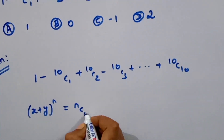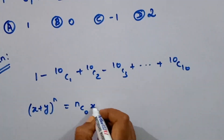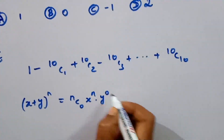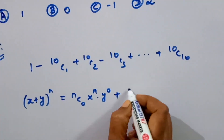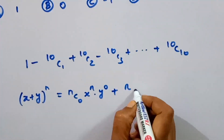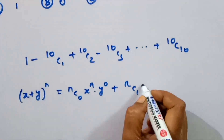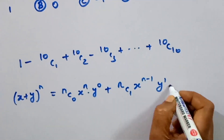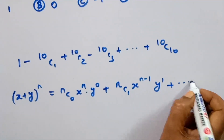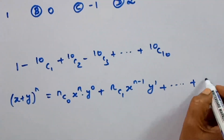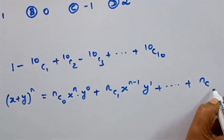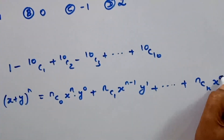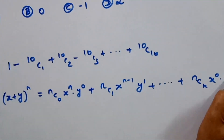The binomial expansion is: nc0 times x to the power n times y to the power 0, plus nc1 times x to the power n minus 1 times y to the power 1, plus ... plus ncn times x to the power 0 times y to the power n.